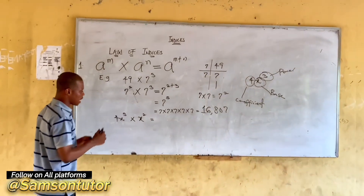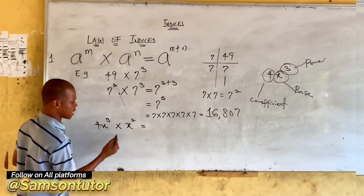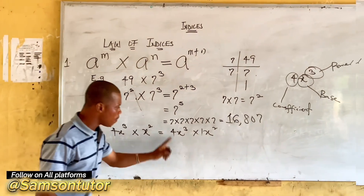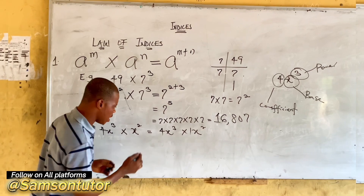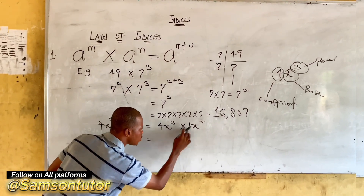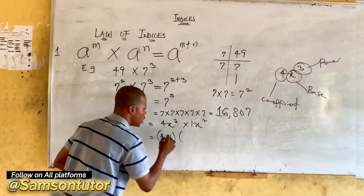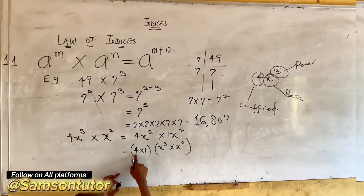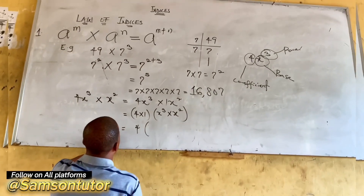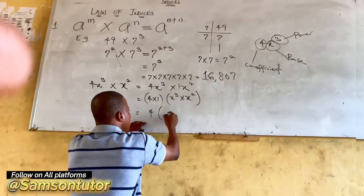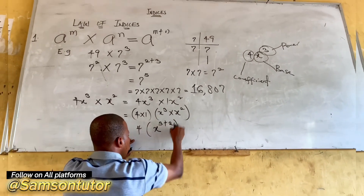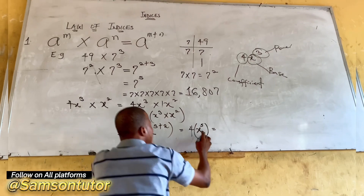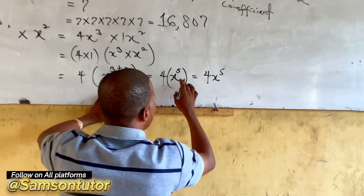There is an invisible 1 beside the second x, so we have 4x raised to power 3 times 1·x raised to power 2. We treat it as: 4 times 1 in brackets, times x raised to power 3 times x raised to power 2. Four times one gives four. Applying the first law to x: 3 plus 2 equals 5, giving us 4x raised to power 5 as our answer.